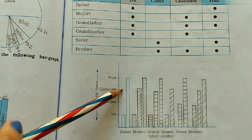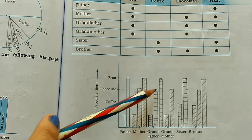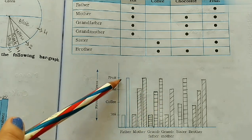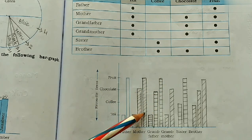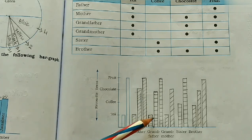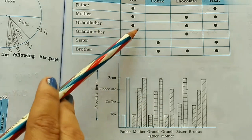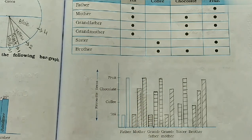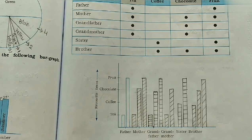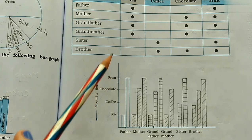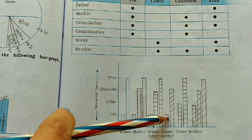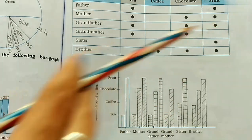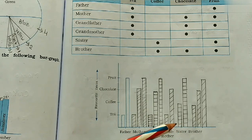For grandfather: he likes chocolate, so take the measurement of chocolate with help of scale and draw like this, then fruit — take the fruit measurement and draw like this. You can make a design inside the graph, or you can make it simple. Grandmother likes tea and chocolate — she does not like fruit, there is no symbol for fruit — so you draw only two bars: tea and chocolate.